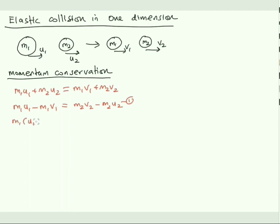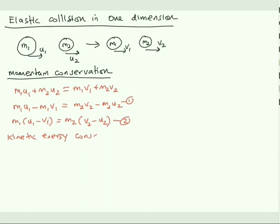Taking m1 out as a common factor on the left-hand side: m1(u1 − v1) = m2(v2 − u2), with m2 factored out on the right-hand side. Call this equation two.